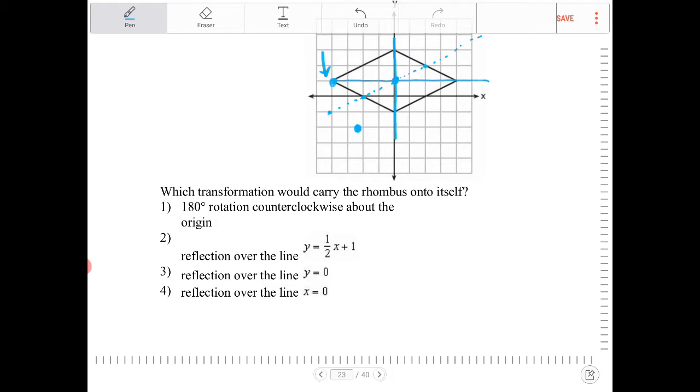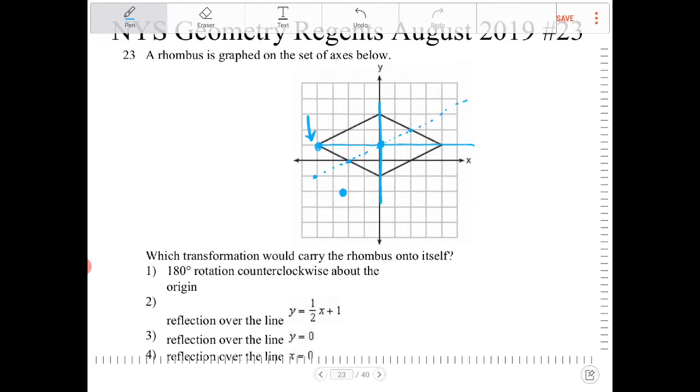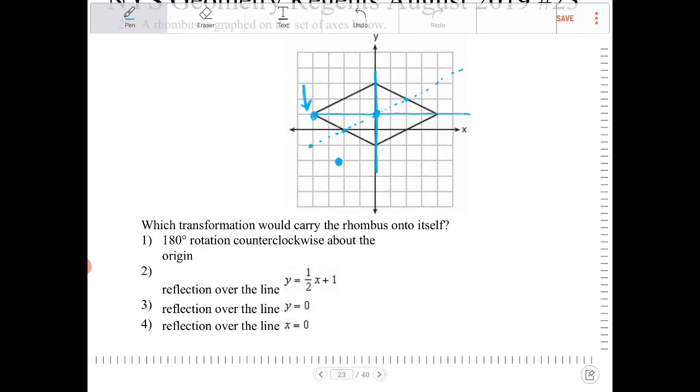Option three: Reflection over line y equal to 0. y equal to 0 is a horizontal line. If we were to reflect that over this, it would not land on itself. It would land right here. So that's not good.